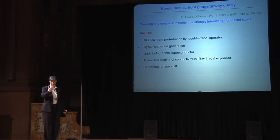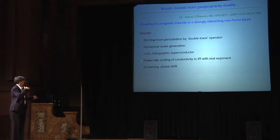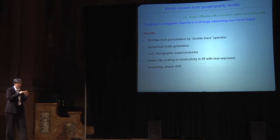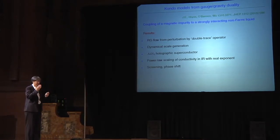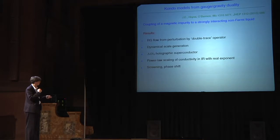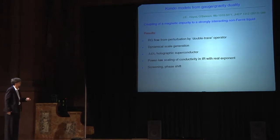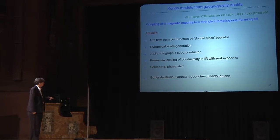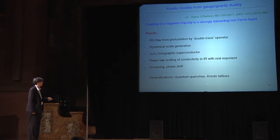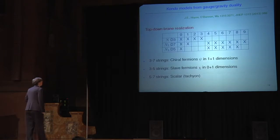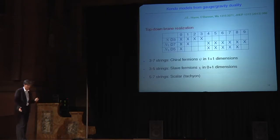In QCD there is also scale generation at low energies. The holographic model involves an AdS_2 holographic superconductor. We cannot see the logarithmic behavior of the resistivity at low temperatures because that is an effect of the free electron gas, but we get some interesting power-law scaling of the conductivity with a real exponent, we can see the screening, and there is a phase shift in our model. There are also interesting generalizations related to quantum criticality and this is a starting point for studying Kondo lattices.